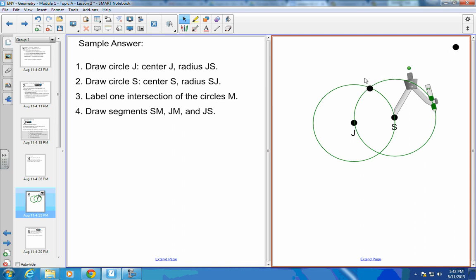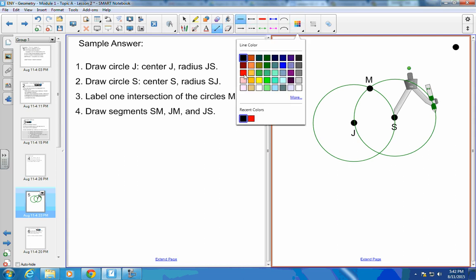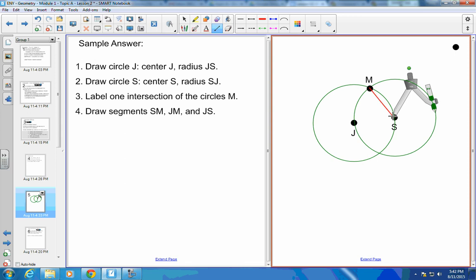Then label one intersection of these circles. There's my intersection of the circles and label that M. If I just finish up by drawing segments, I'm going to draw a segment S to M, J to M, and J to S. So J to M should be a radius, J to S should be a radius, S to M should be a radius. All of the sides of the triangle have to be the exact same because they're all radii of the circle.